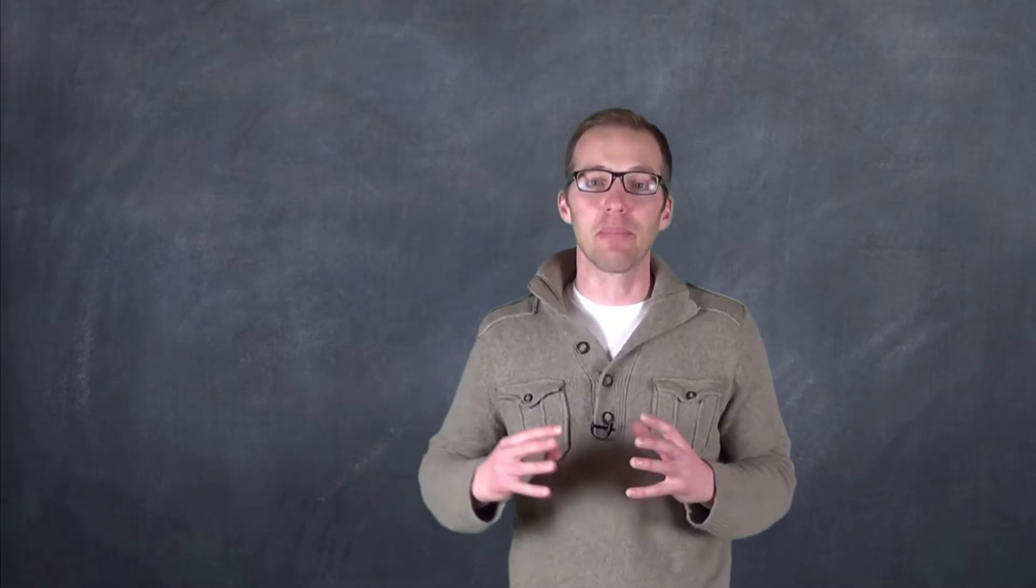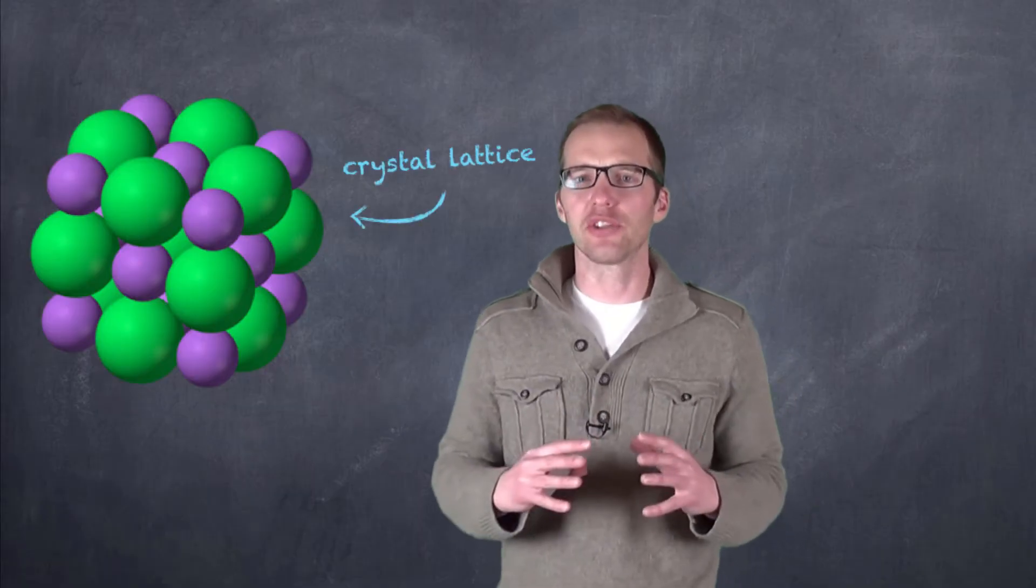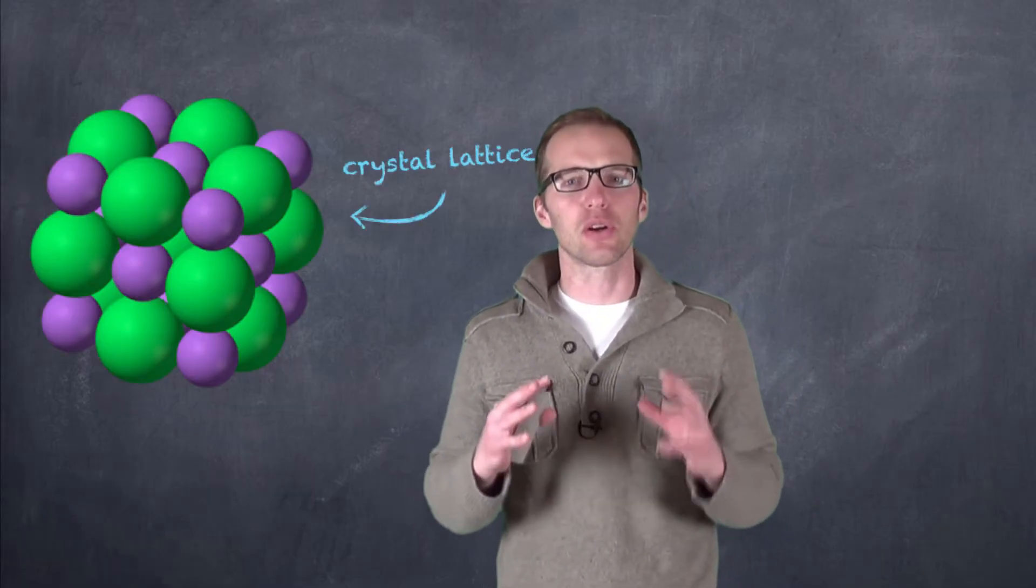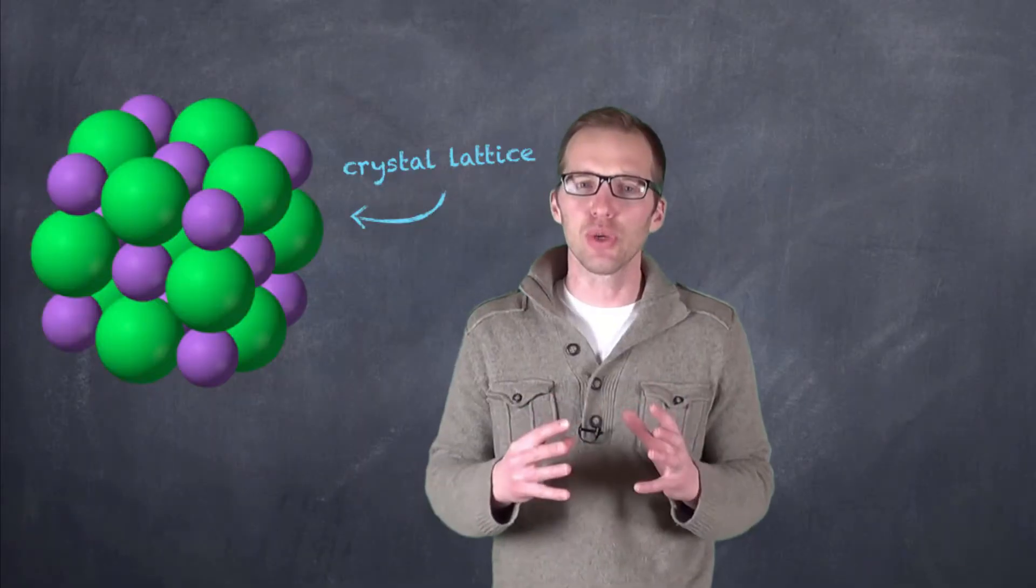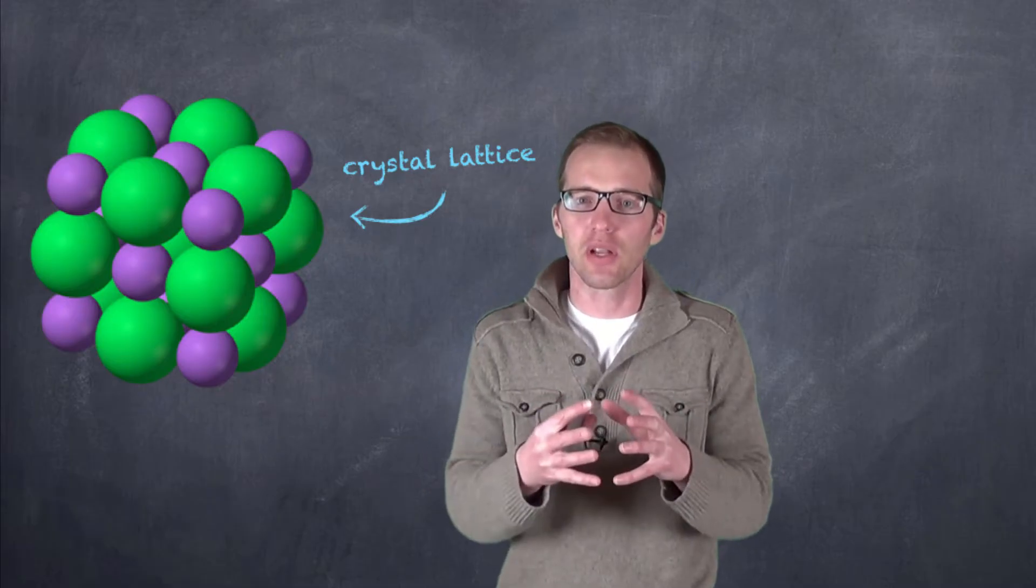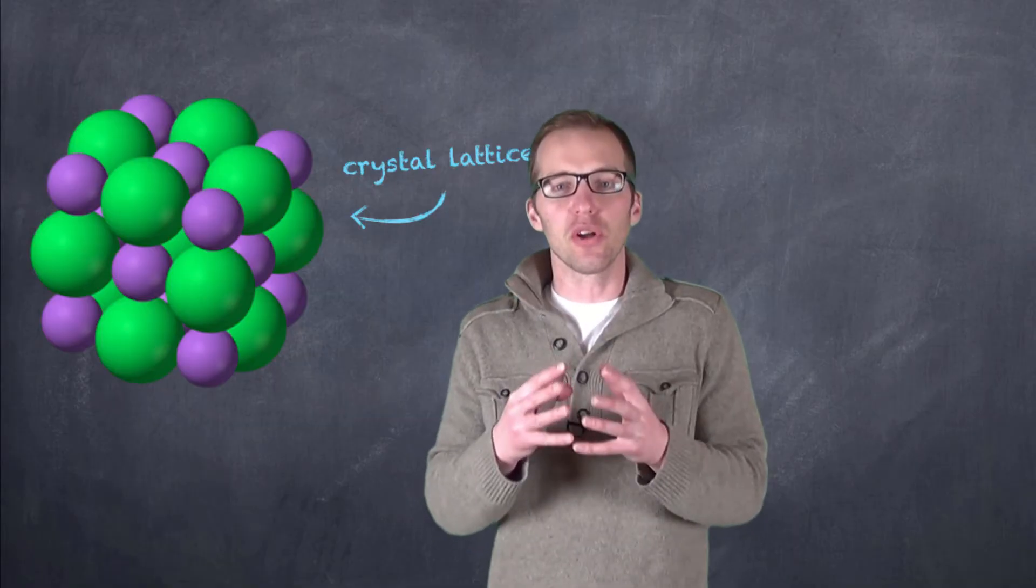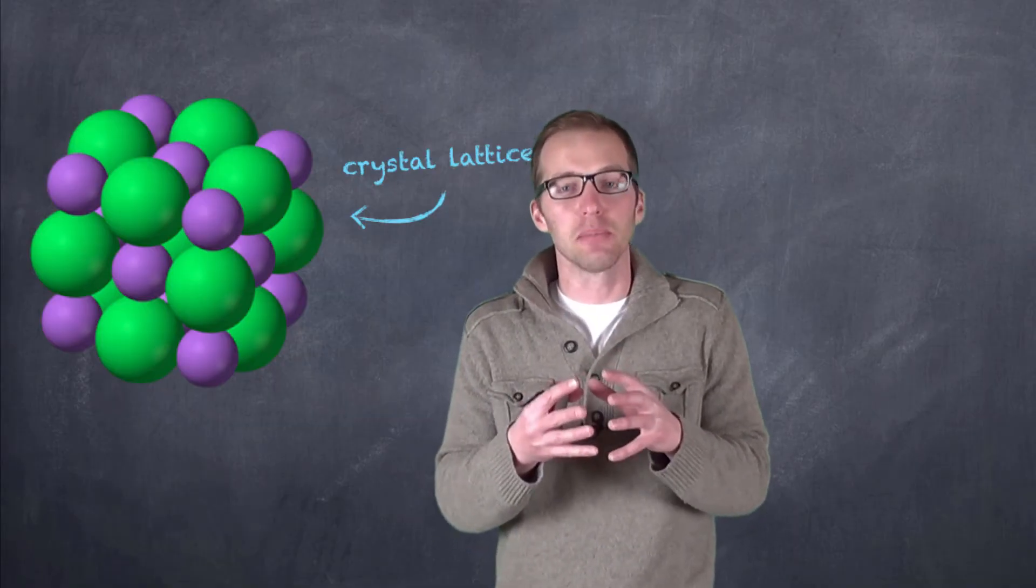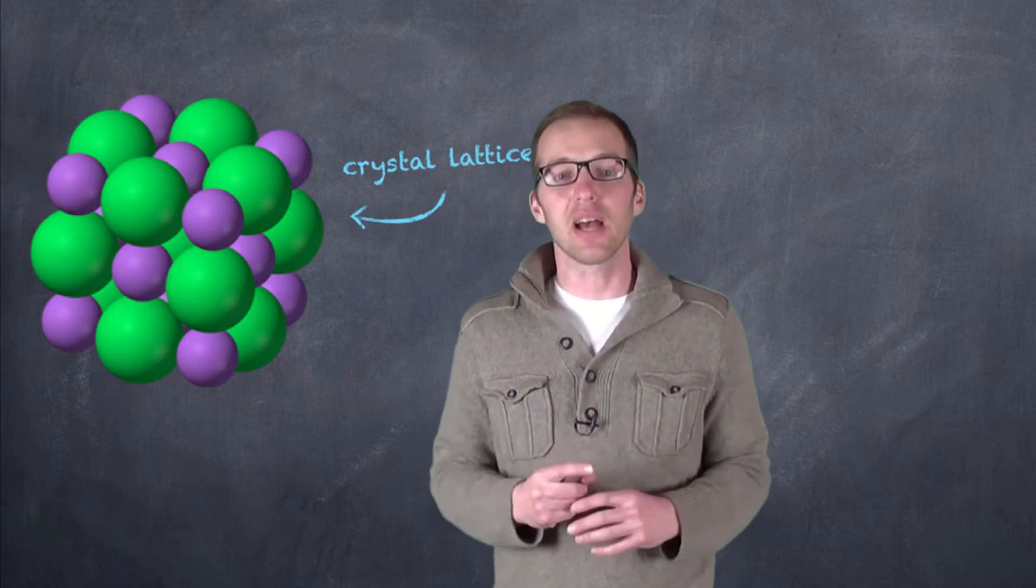Now, ionic compounds are identified by a crystal lattice structure that is formed. And you'll recognize the shape of this because if you've ever taken a look at a crystal of salt, even table salt, you'll notice that it's kind of a cube shape. Well, funny enough, if we get down small enough to the particle level, we'll notice that the structure of salt at the particle level is very similar to the structure at a macroscopic level that we can actually see and taste and touch.